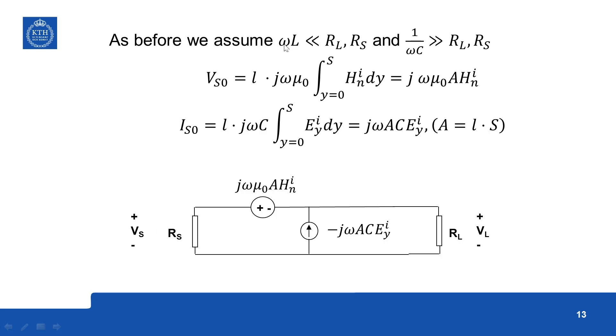So as before if we say that omega L is far less than the terminal impedances and 1 by omega C is far greater than the terminal impedances, we can neglect those capacitance and inductance.